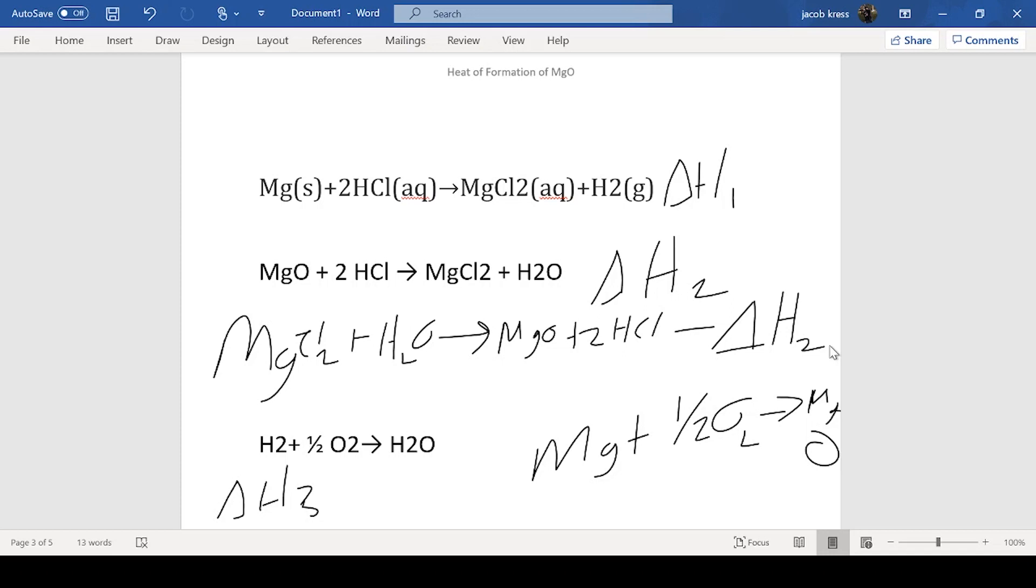Now the reason I flipped the second equation is we want to get to this Mg plus one half O2 gives me magnesium oxide. If we look, we're going to need magnesium oxide as a product. What's very interesting with this is it's similar to summing up formulas in mathematics. When you have multiple equations of a line and you're trying to find a point they meet, you add the equations up and solve for it. You can do the same thing in chemistry here, and we can cancel things out when they appear on different sides of equations when we add them up.